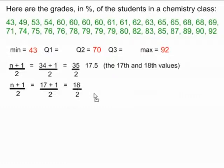17 plus 1, of course, is 18. And 18 divided by 2 is 9. So, the 9th value will be our q1. The 9th value, if I count from the bottom, is this first of the 61's. So our q1 is 61.